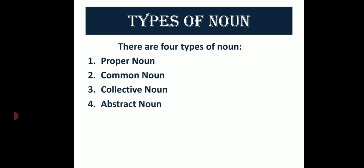Types of nouns. Sangya ki prakar. There are four types of nouns. Sangya char prakar ki hoti hai. Number one: proper noun — vyakti vachak sangya. Number two: common noun — jati vachak sangya. Number three: collective noun — samuday vachak sangya. Number four: abstract noun — bhav vachak sangya.